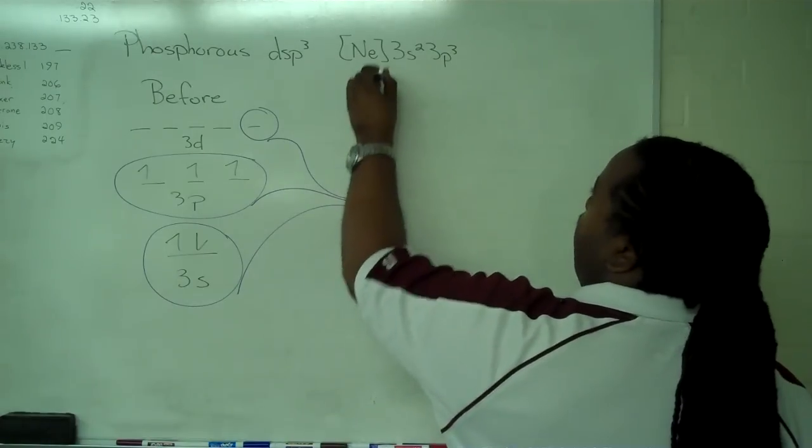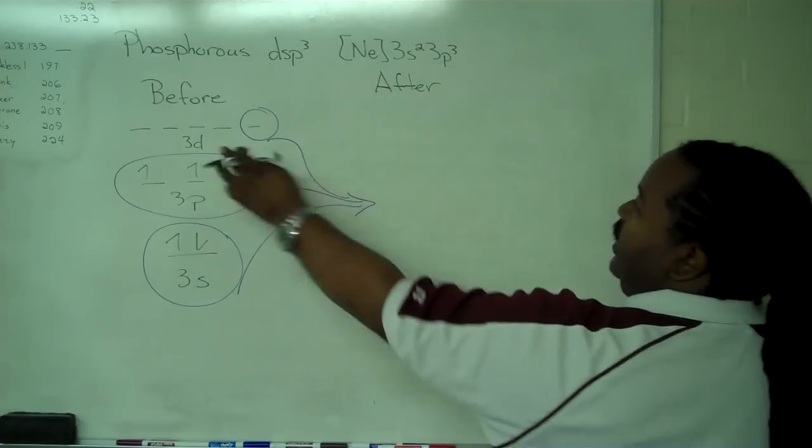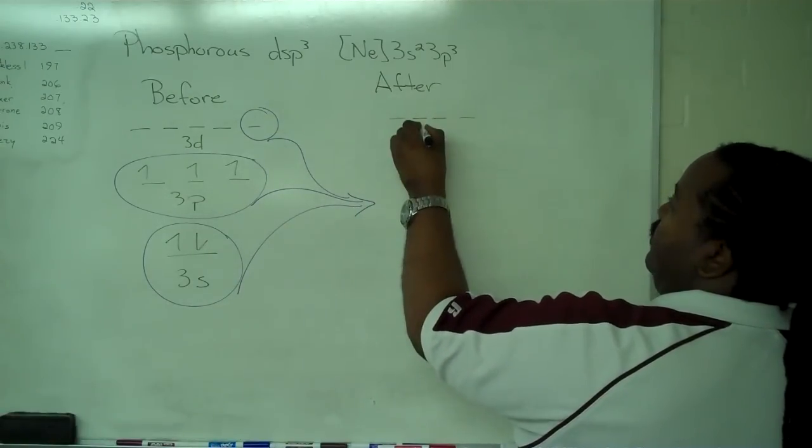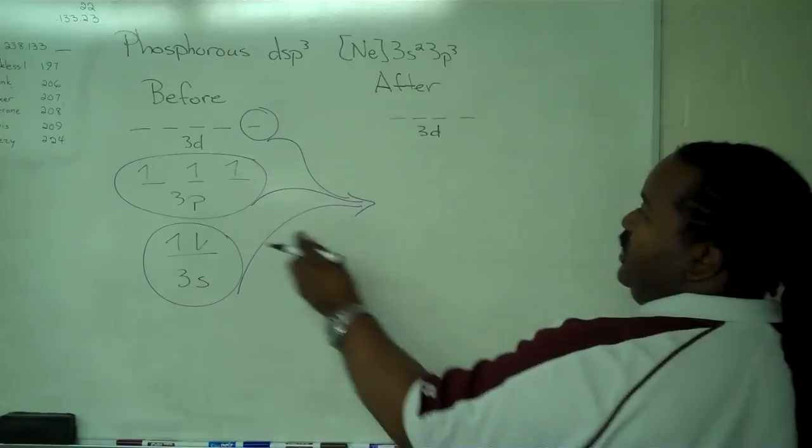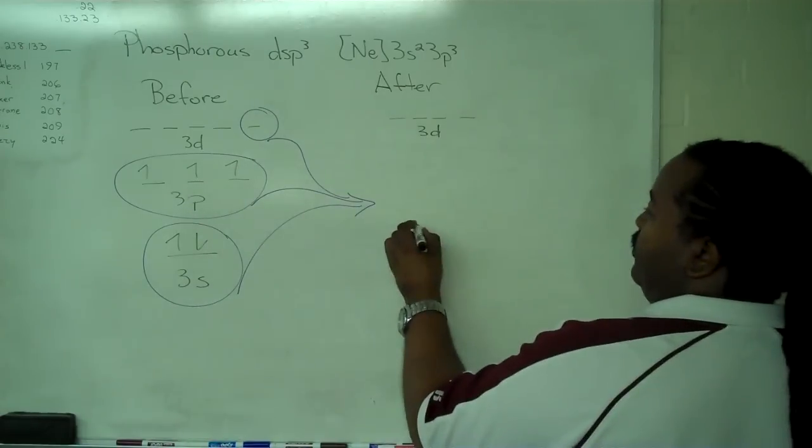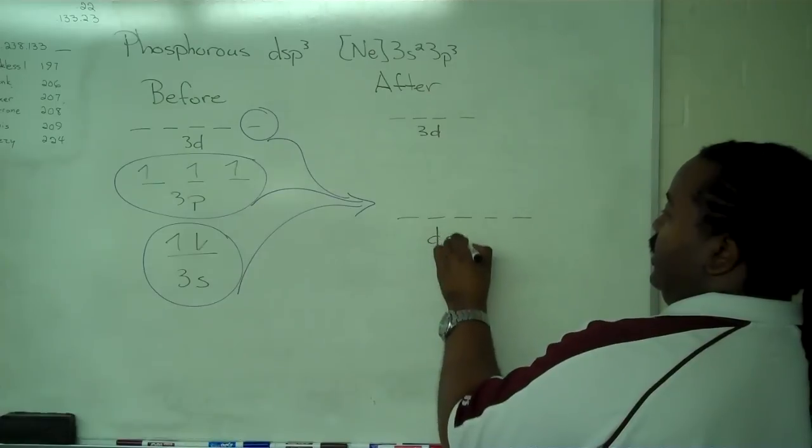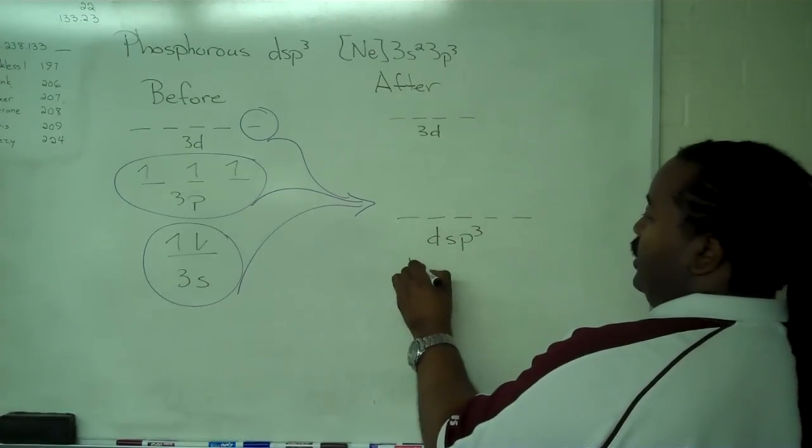And so in the after picture, we have four orbitals that are 3d that were left unchanged. And we now have five of our dsp³ hybrids.